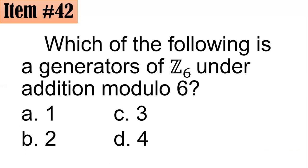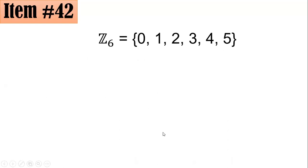Item 42: Which of the following is a generator of Z6 under addition modulo 6? Did you go for 1, 2, 3, or 4? Z6 is the set of all remainders when an integer is divided by 6, so the elements are 0, 1, 2, 3, 4, and 5.